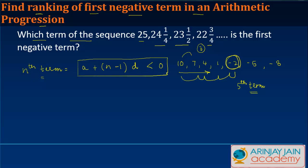first negative term, we can find it by setting the nth term less than 0. We need to find the value of n for which this holds true. The first term of the AP is 25, so we have 25 plus